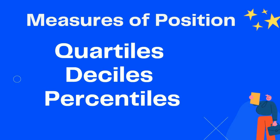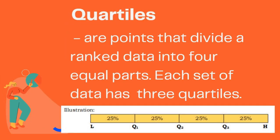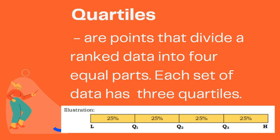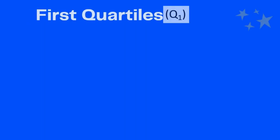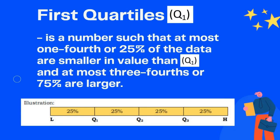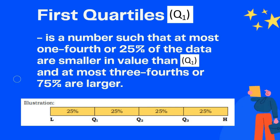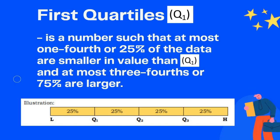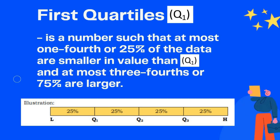These are quartiles, deciles, and percentiles. Let us take the first quartile. What are quartiles? These are points that divide a ranked data into four equal parts. Each set of data has three quartiles. The first quartile, Q1, is a number such that at most one-fourth or 25% of the data are smaller in value than the first quartile and at most three-fourths or 75% are larger.